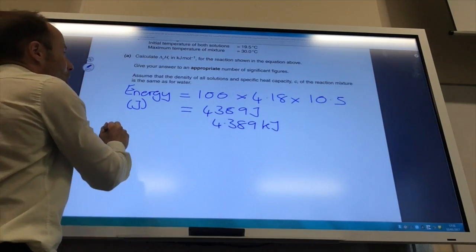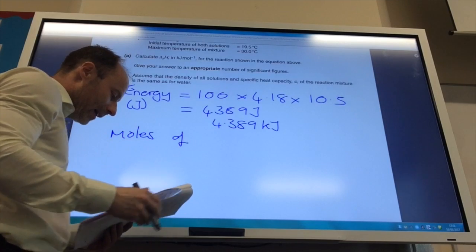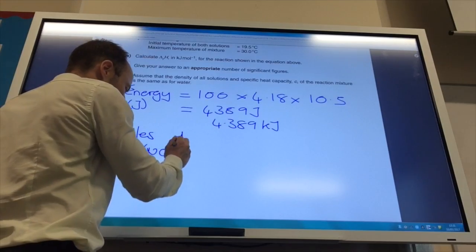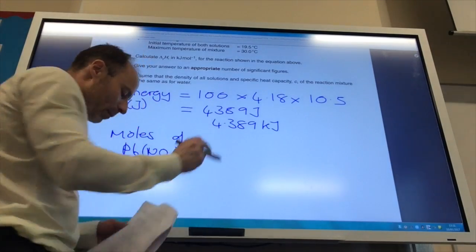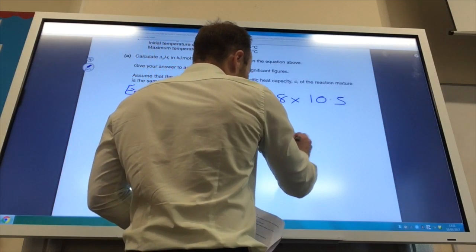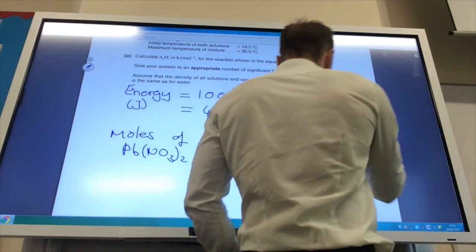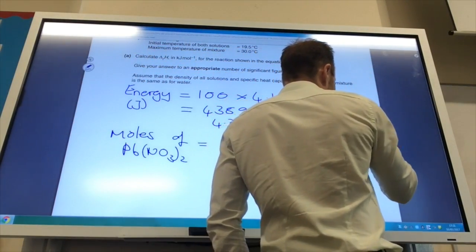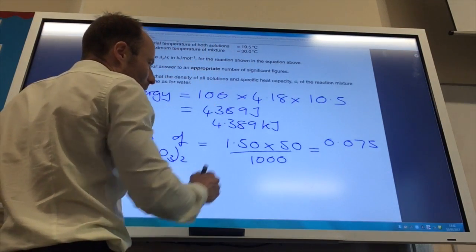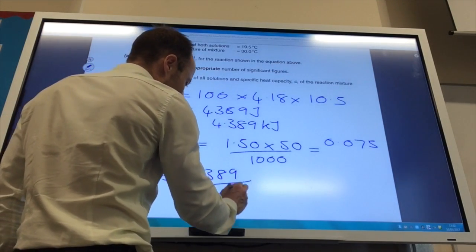Right, I'm now going to work out my moles of lead nitrate because the other one is in excess. So the moles of lead nitrate is going to be concentration times volume over 1000, and that comes to 0.075. And then finally to get your answer, delta H in kilojoules per mole is going to be 4.389 divided by 0.075.